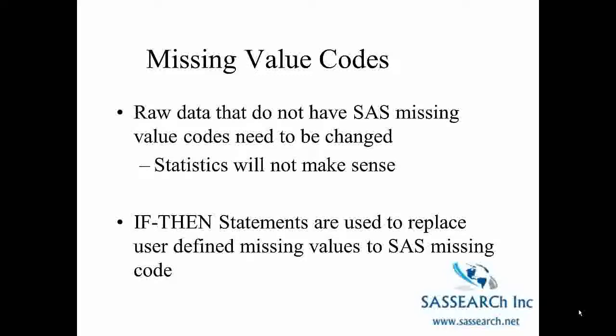These codes need to be changed, otherwise when you do descriptive statistics, the statistics are not going to make sense. If we had entered age and missing values were represented by 999, and we were looking at minimum and maximum values for age, we might see a maximum value of 999, and that is certainly not going to make sense as a possible age value.